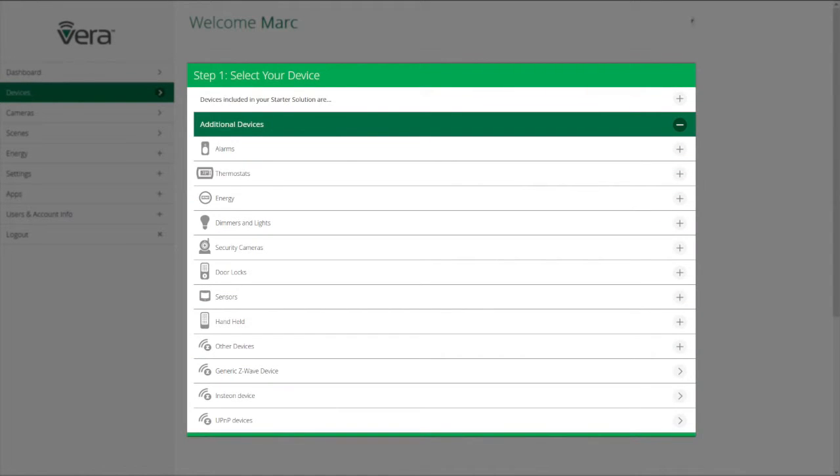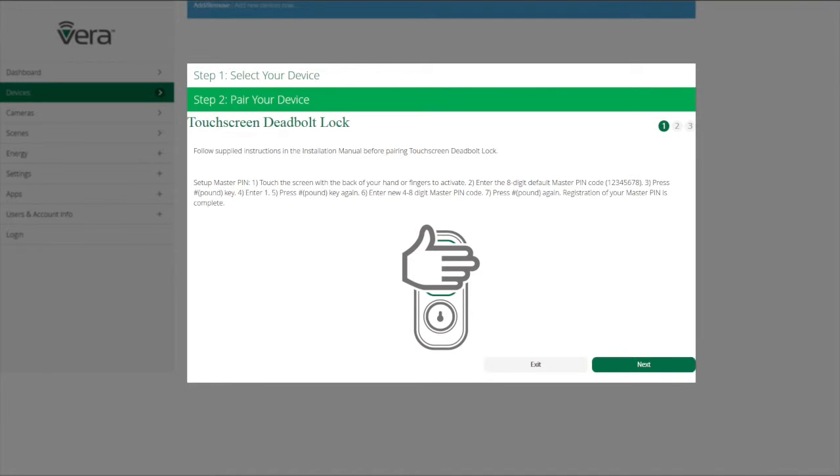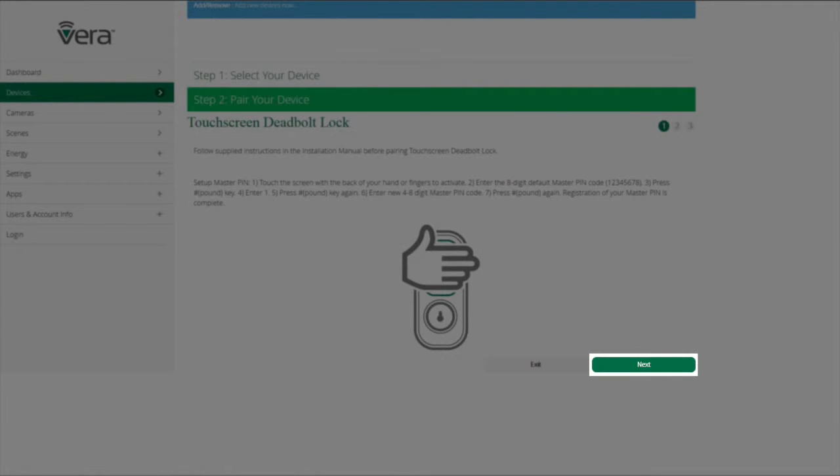Then select from the list the type of device that you're going to pair to your Vera network. I'm going to select the Yale Touchscreen Deadbolt by clicking on the arrow, and then I'm going to follow the instructions on the screen step by step to pair my device. Once I've done what it says on the screen, I click Next.